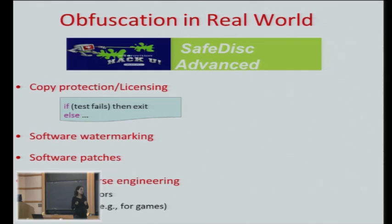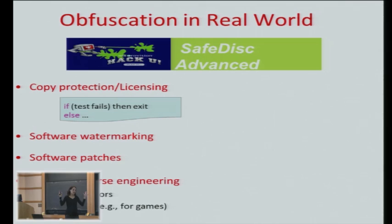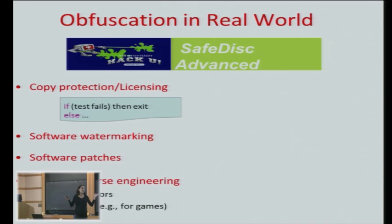Obfuscation has also been used for watermarking, where you want to make sure that if a code is stolen you can track where it came from — you put a watermark in the code and make it hard to remove. It's also used for patching: let's say Microsoft releases code with a bug that does something fatal on some sparse set of inputs. They want to release a patch saying don't run the code on these inputs, but if they just release it, an adversary can see where the problematic inputs are and exploit it. So they want the patch obfuscated, so as not to reveal where the vulnerability is.